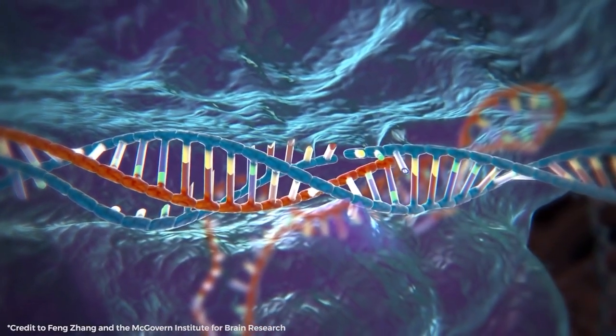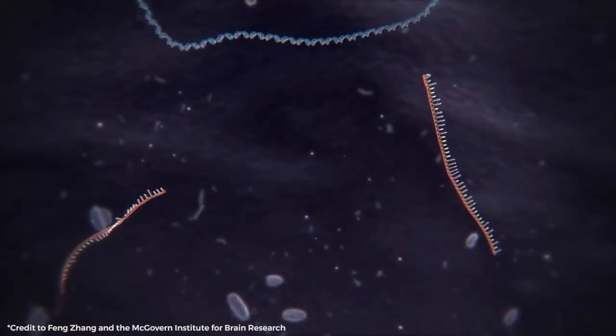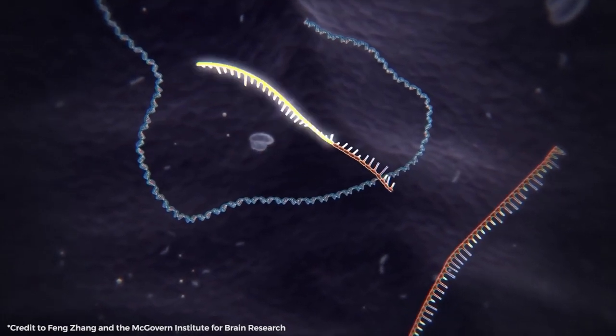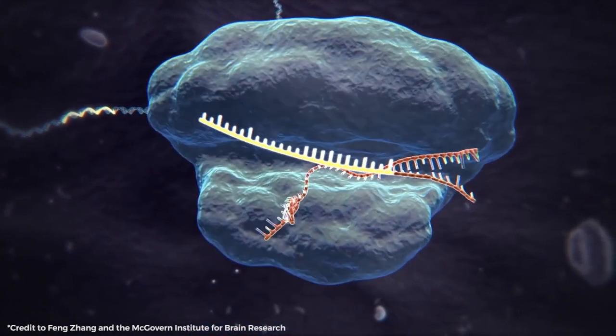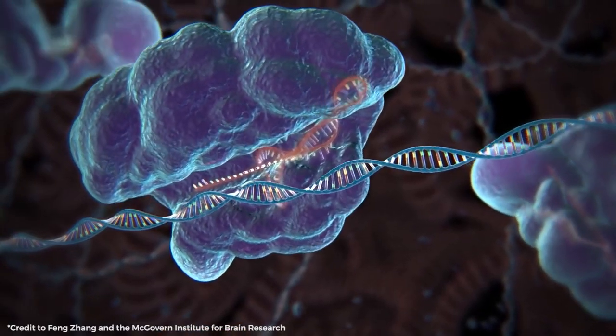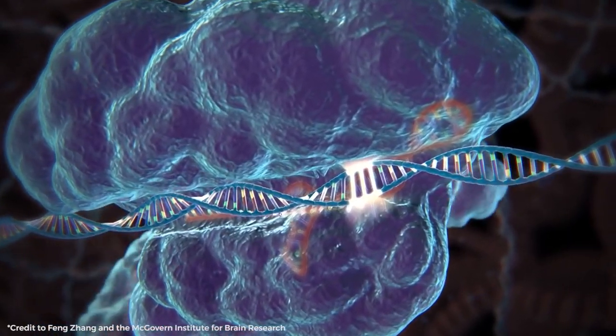Bacteria are able to remember viruses thanks to CRISPR arrays. In the event that the viruses retaliate, the bacteria generate RNA segments from the CRISPR arrays that are able to detect and bind to particular sections of the virus' DNA. The virus is subsequently rendered inoperable by the bacteria after cutting the DNA apart with Cas9 or a related enzyme.